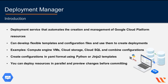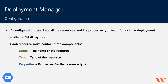Cloud Deployment Manager lets you preview the configuration before it's deployed and lets you deploy in parallel. A configuration describes the resources you want for a single deployment. A configuration is a file written in YAML syntax that lists each of the resources you want to create and its respective resource properties. The configuration must contain a resources section followed by the list of resources to create. Each resource must contain three components: the name — a user-defined string to identify the resource, such as myVM, project data disk, or the test network.